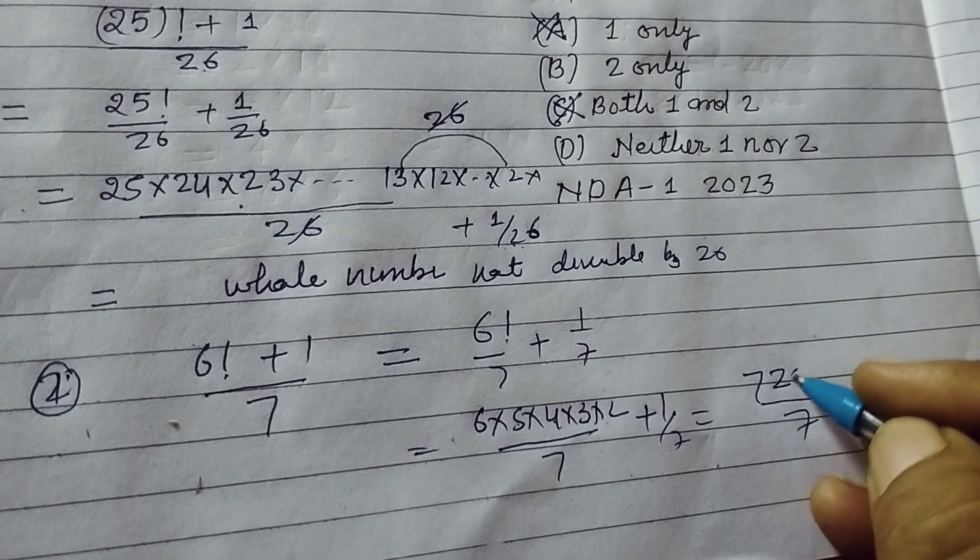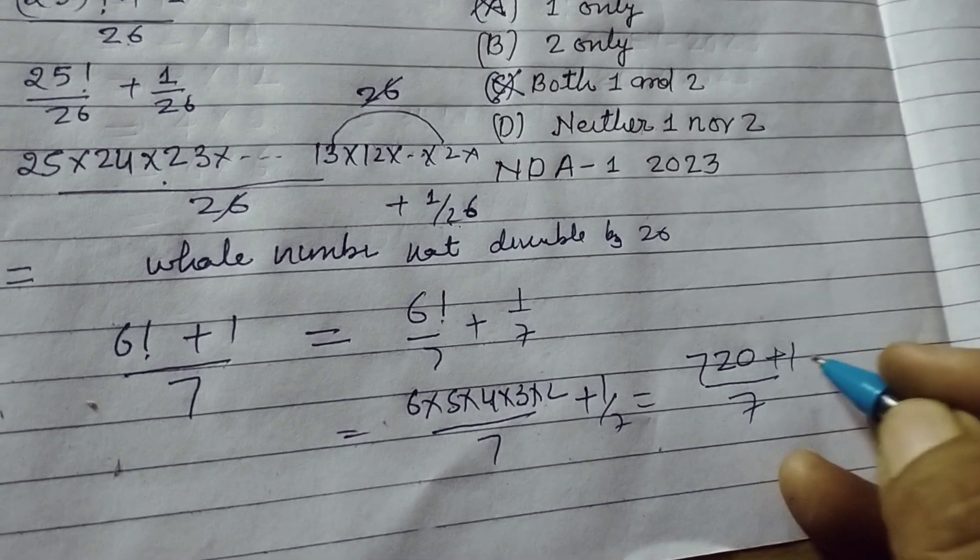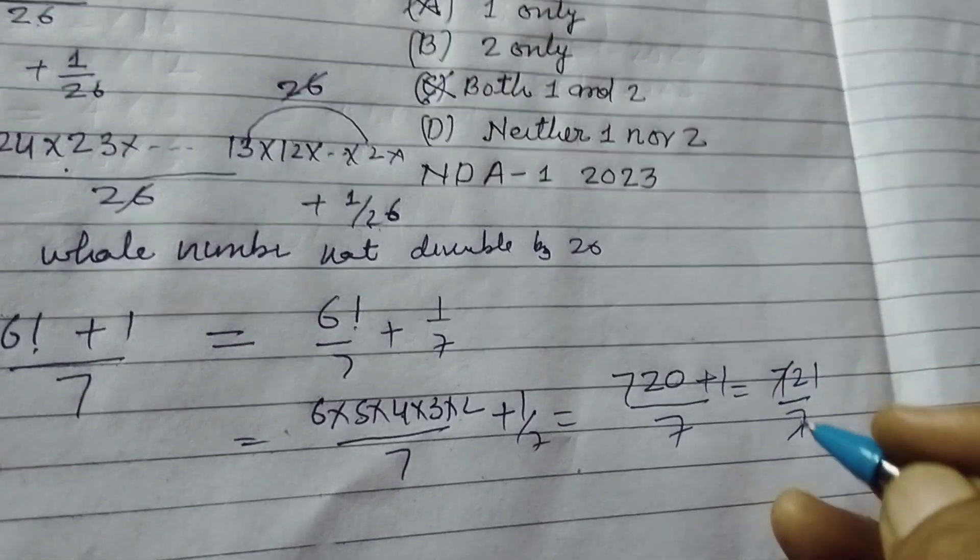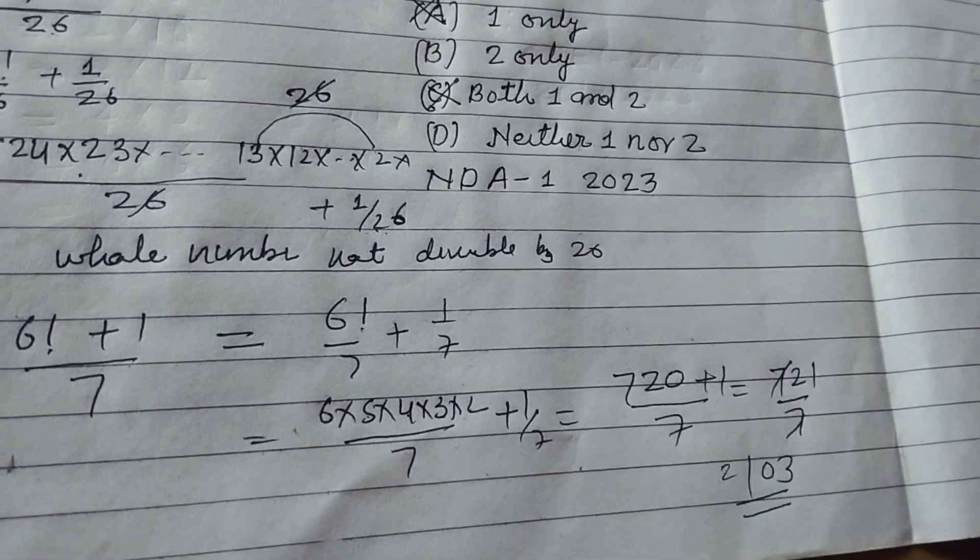This is 720 plus 1, this is 721 upon 7. 7 × 1 is 7 and 7 × 3 is 21. So it is divisible by 7.